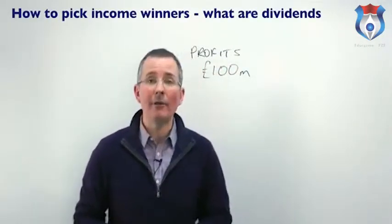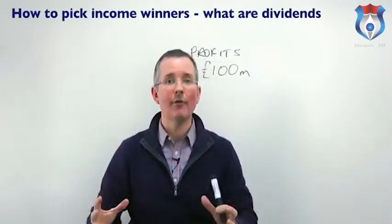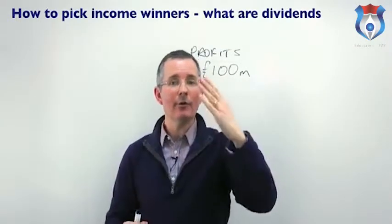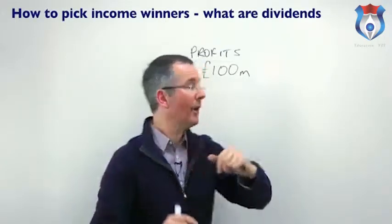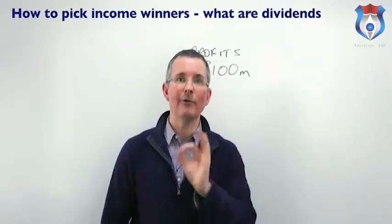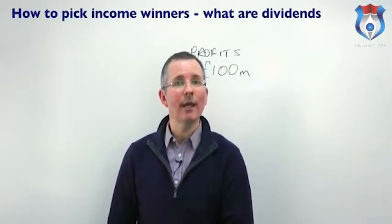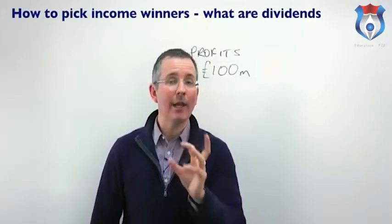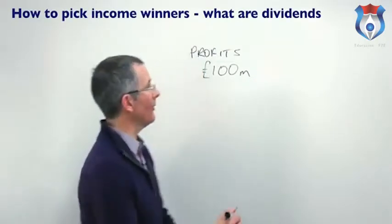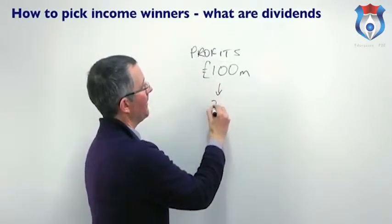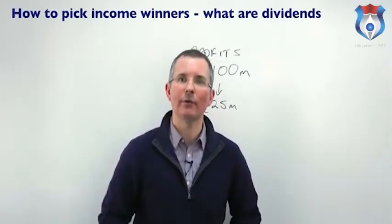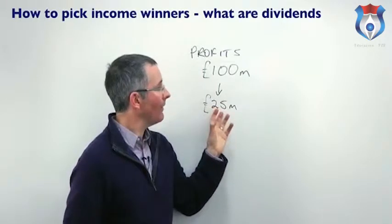Profits are basically what you get over 12 months — one trading period — when you compare what the company has sold to what it costs to make those sales. So: what you've sold minus what it costs to make those sales equals profit. The directors then make a decision: do we keep that profit in the business and try to grow it in future years, or do we pay it out to shareholders? Some companies are much more generous than others. For income investors, we want to find companies that are reliable payers of regular dividends. So the directors might say: we'll pay out £25 million in total as dividends.